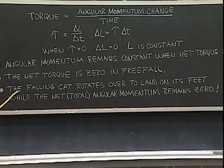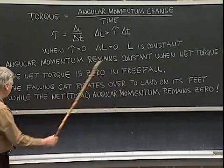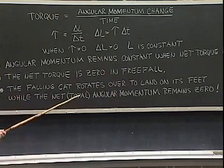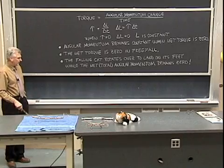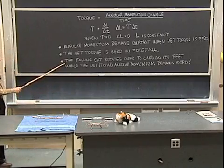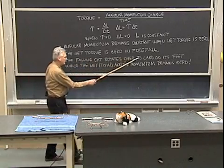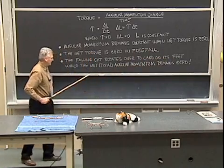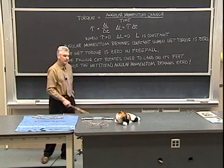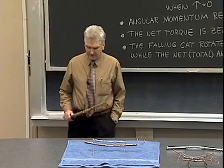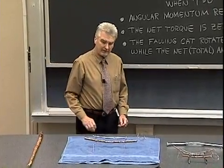Therefore, as the falling cat rotates over to land on its feet, the total angular momentum remains constant, in fact remains zero during that entire time. Let me state this one more time. The falling cat rotates over to land on its feet while the net or total angular momentum remains zero. Now, I'd like to demonstrate how that works.